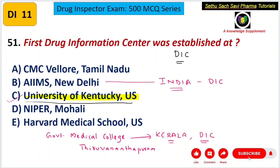The first Drug Information Center in the world was established at the University of Kentucky and was established by a clinical pharmacist called Dr. Kenneth Miller. So the correct answer for this question is C choice.